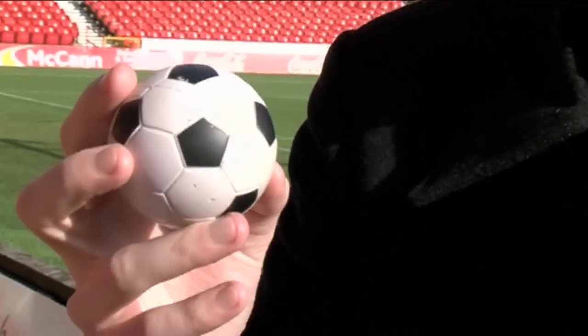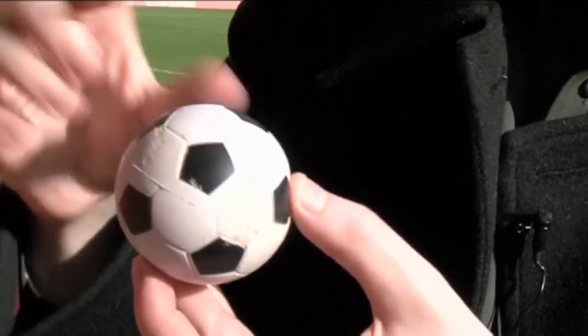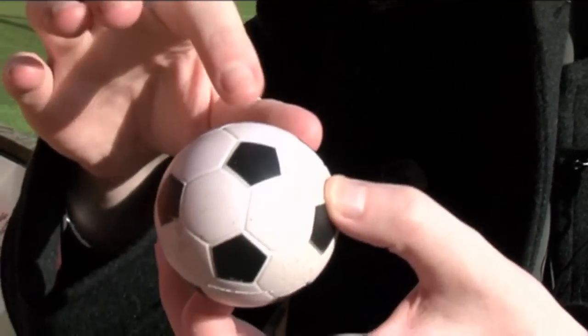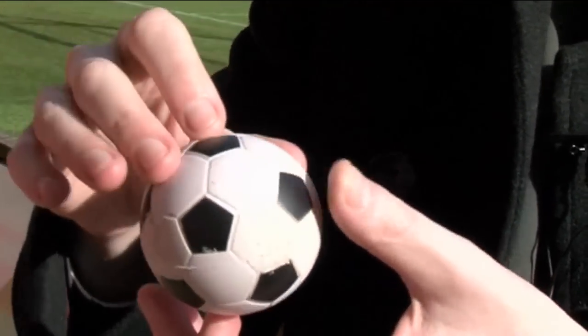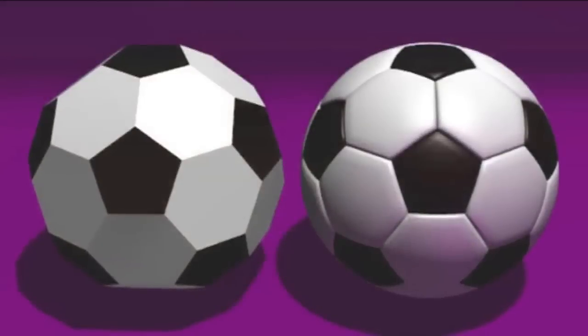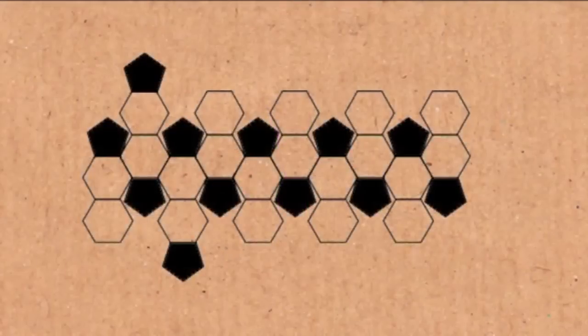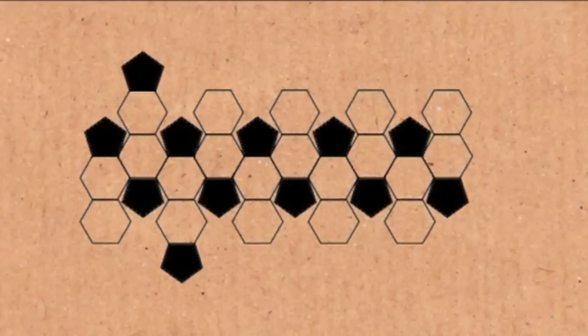The truncated icosahedron has 12 pentagon faces — here they are in black — and 20 hexagon faces, there they are in white, and they fit together. This is your traditional football. This was used in professional games since the 1970s, and has been more recently replaced with a modern ball which actually uses fewer panels.